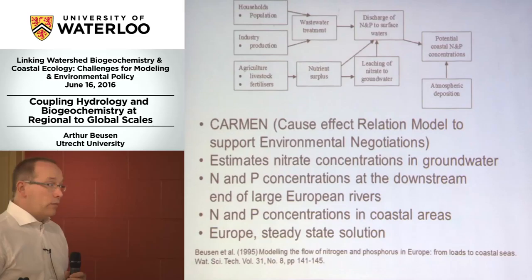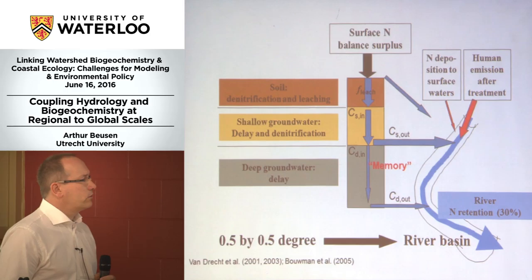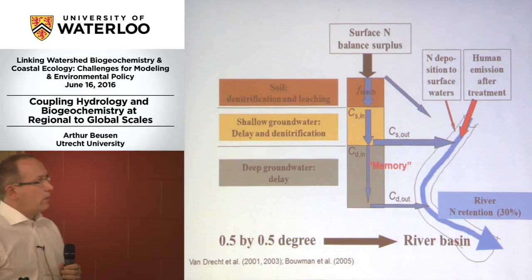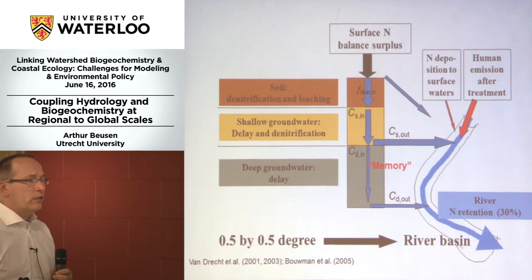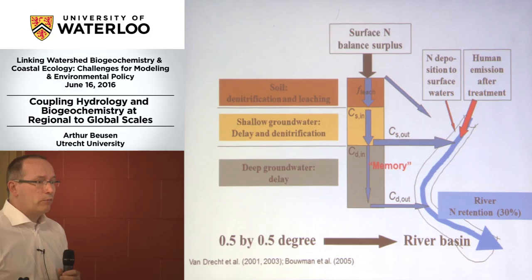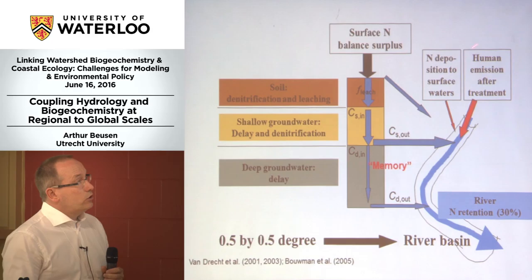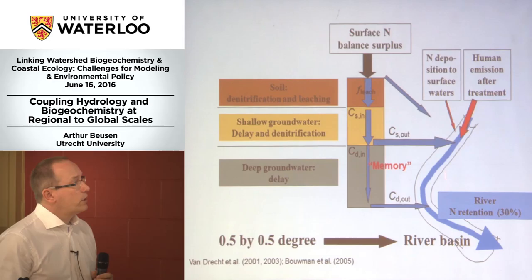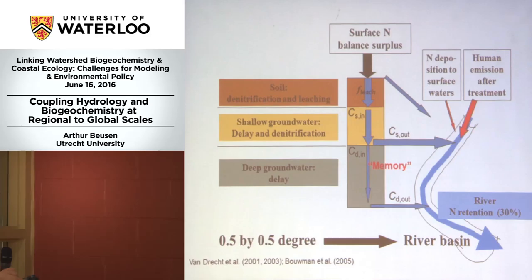There were publications in 2001, 2003, and 2005 where we spent a lot of time on the soil compartments with different representations. This was only for nitrogen — denitrification and leaching, shallow groundwater, denitrification in that part, deep groundwater — and all those fluxes going to the river. There you see the factor: 30% retention. On the other side there were also human emissions — wastewater treatment plants that were installed — and deposition. It was a nice model.